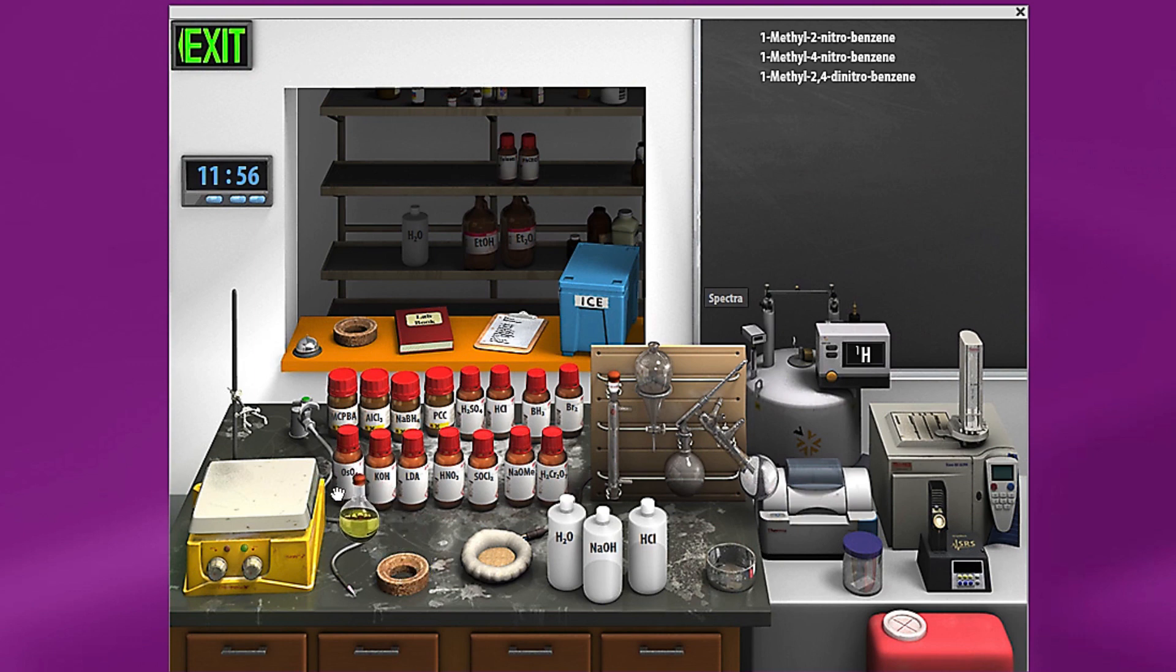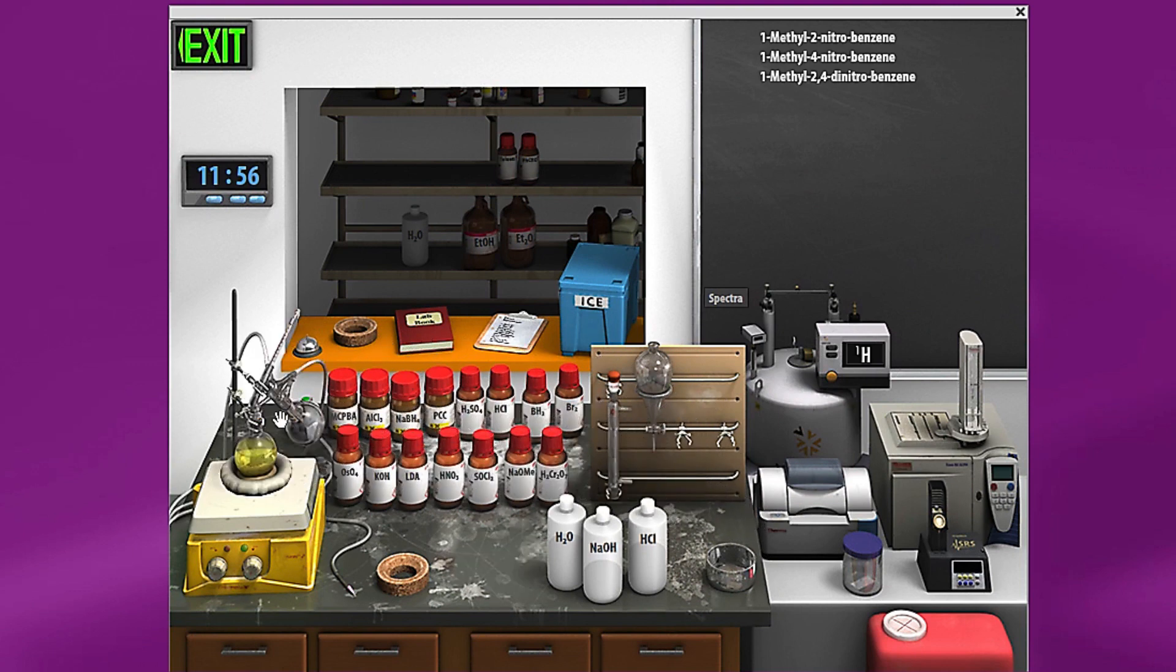Now to do the distillation, you'll drag your organic layer back here onto the stir plate and put it in place. Then you'll come back over here and grab your distillation apparatus, drag it to your flask, and it will go in place. The distillation apparatus has a thermometer here. If you hover your mouse over this thermometer, you'll see a temperature which will change as we begin the distillation.